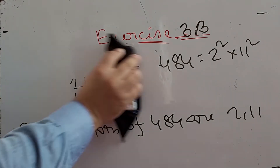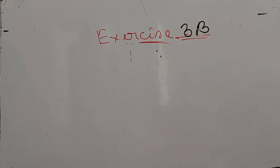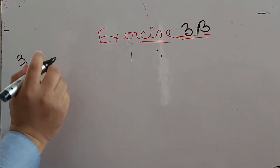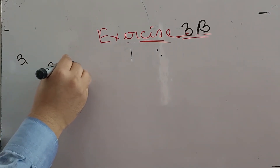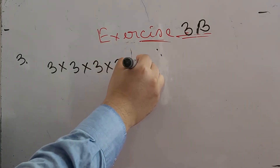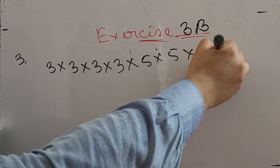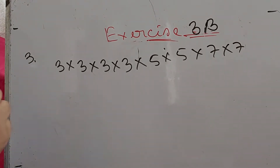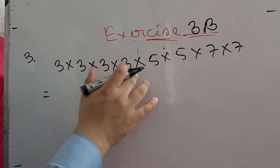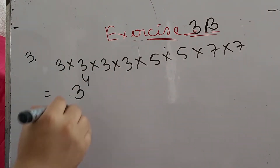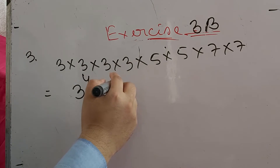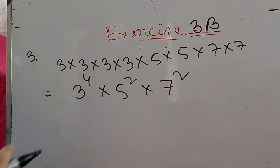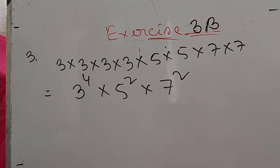Number three: write in index form. Three into three into three into three, into five into five, into seven into seven. So three into three into three into three means three to the power four, into five into five means five squared, into seven into seven means seven squared. That is the way you convert this into index form.